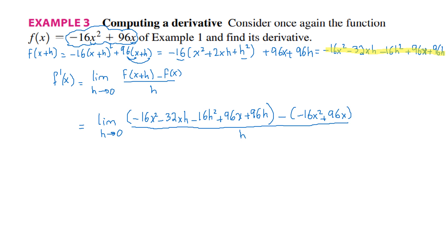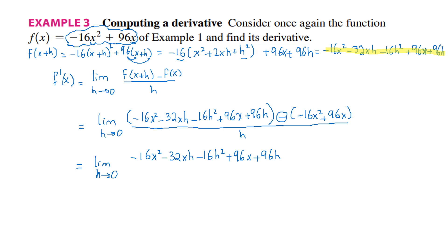Do some simplifications in the numerator. Minus 16x squared will cancel with plus 16x squared, and 96x will cancel with minus 96x. Be careful: when you have a minus and you're expanding, switch the signs after. It becomes plus 16x squared and minus 96x. All divided by h.